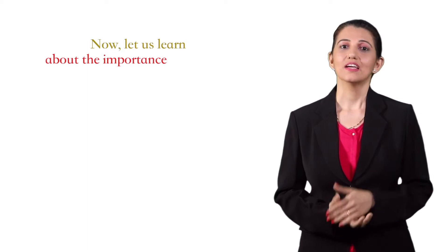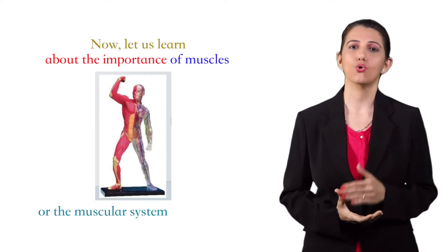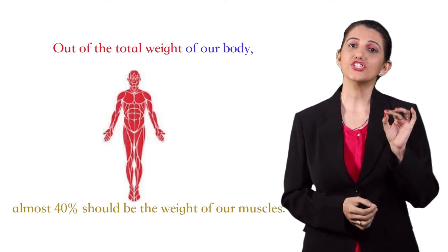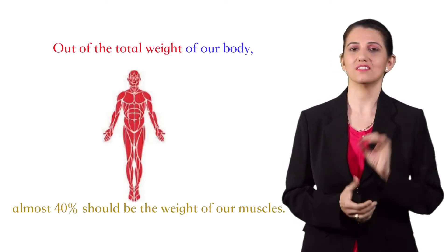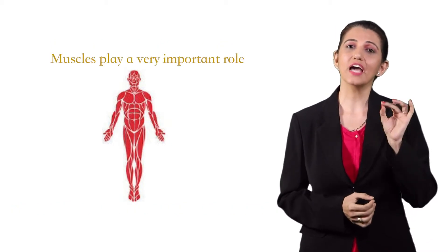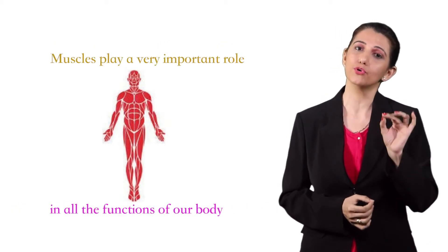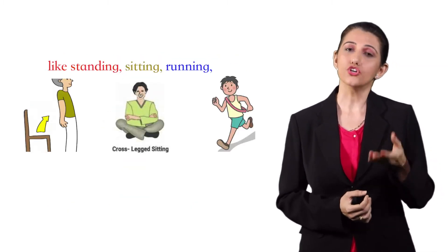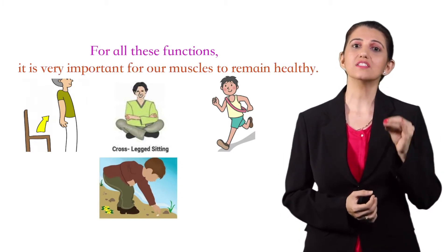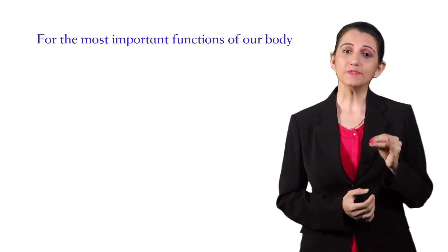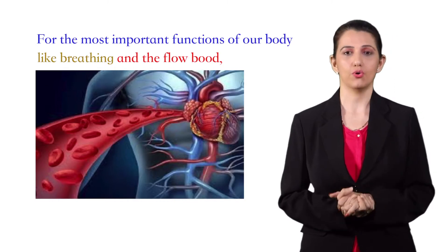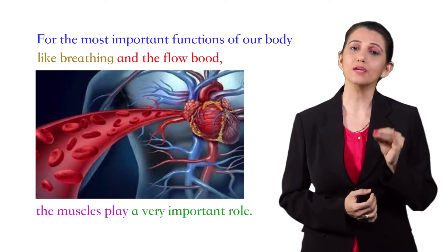Now, let us learn about the importance of muscles or the muscular system in our body. Our body is made up of approximately 600 muscles. Out of the total weight of our body, almost 40% should be the weight of our muscles. Muscles play a very important role in all the functions of our body, like standing, sitting, running, bending. For all these functions, it is very important for our muscles to remain healthy. For the most important functions of our body, like breathing and the flow of blood, the muscles play a very important role.